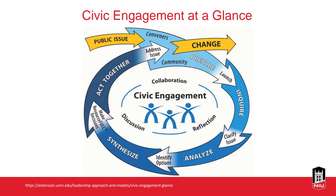This model begins with a public issue at the top and then moves to the conveners and community preparing to address that issue. The process involves launching an inquiry, clarifying the issue, analyzing it, identifying your options, synthesizing data, making resourceful decisions, acting together to address the issue, and then enacting that change. Something not shown here but that makes this a circular process is evaluating that change and whether it's effective — if not, we start the process over again. So it's iterative.